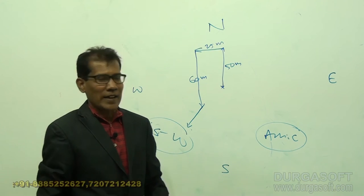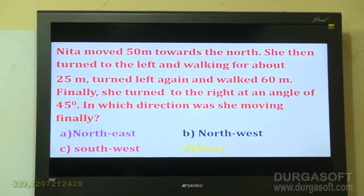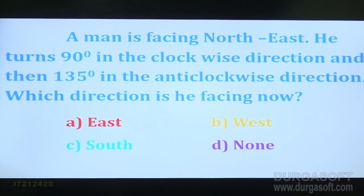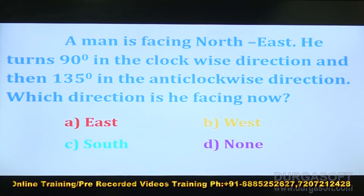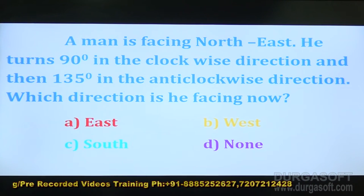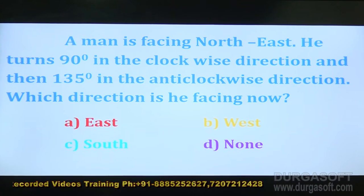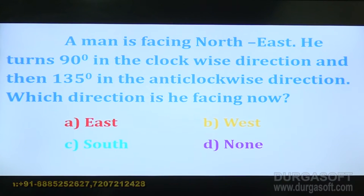This is how we work out a question with angular directions. Now one more question based on angular directions: a man is facing north-east. He turns 90 degrees in the clockwise direction and then 135 degrees in the anticlockwise direction. Which direction is he facing now? This is actually a very easy question if you understand directions — you can get the answer within 5 seconds by visualizing.